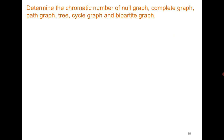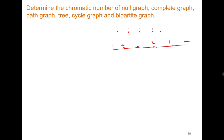Determine the chromatic number of the null graph, complete graph, path graph, tree, cycle graph, and bipartite graph. For the null graph, the same color can be used for all vertices since none are adjacent. For the complete graph Kn, the chromatic number is n. For the path graph, alternate colors can always be given, so it can always be colored with two colors. The tree can also be colored with two colors.